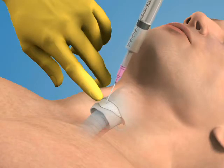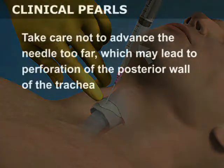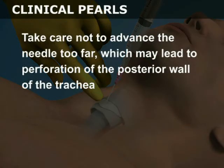Pull back on the plunger during advancement. Entrance into the trachea will be heralded by a return of air into the syringe. Take care not to advance the needle too far, which may lead to perforation of the posterior wall of the trachea.